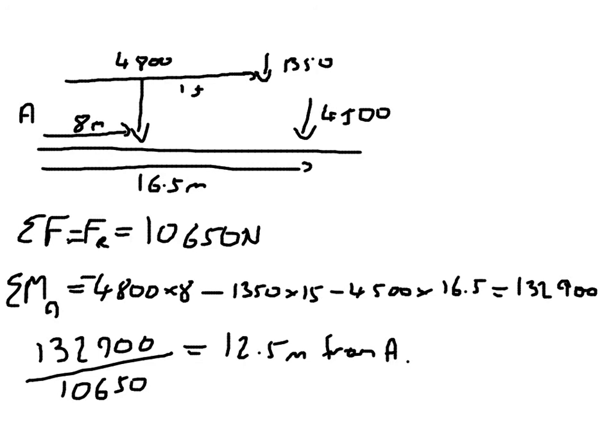So, I could draw one resultant force. Instead of all the distributed loads, instead of these three forces, I could draw one resultant force that was 12.5 metres from A, and it would have a magnitude of 10,650 newtons.